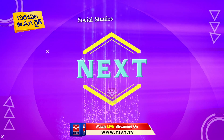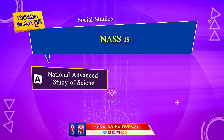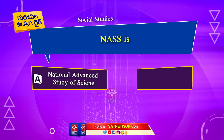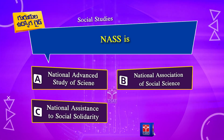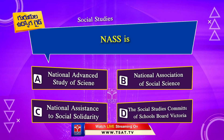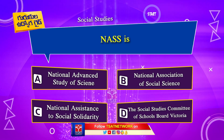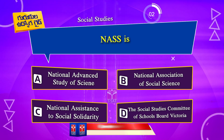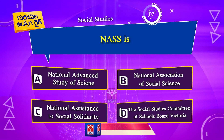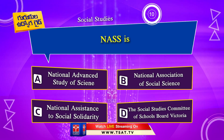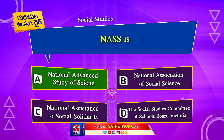Next question. NASIS: Option A. National Advanced Study of Science. Option B. National Association of Social Science. Option C. National Assistance to Social Solidarity. Option D. The Social Studies Committee of Schools Board Victoria. The correct answer is Option A. National Advanced Study of Science.